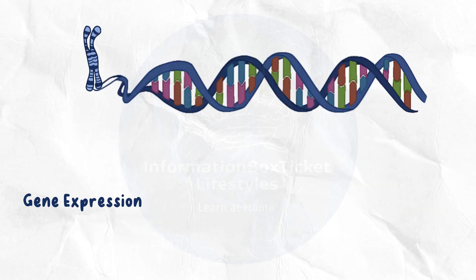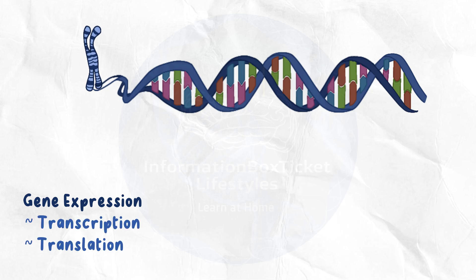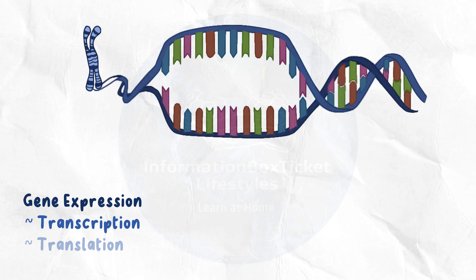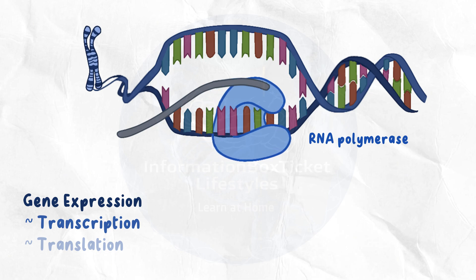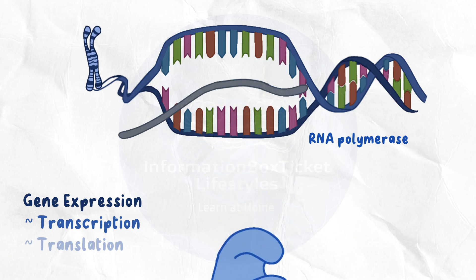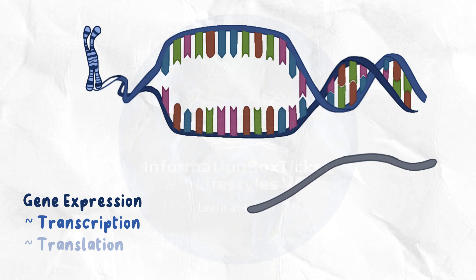Gene expression, on the other hand, is the process of decoding the information encoded in the DNA so that the cell may produce proteins. It involves transcription and translation. Transcription is the process by which RNA polymerase duplicates the gene's nucleotide sequence and produces a messenger RNA molecule, or mRNA.